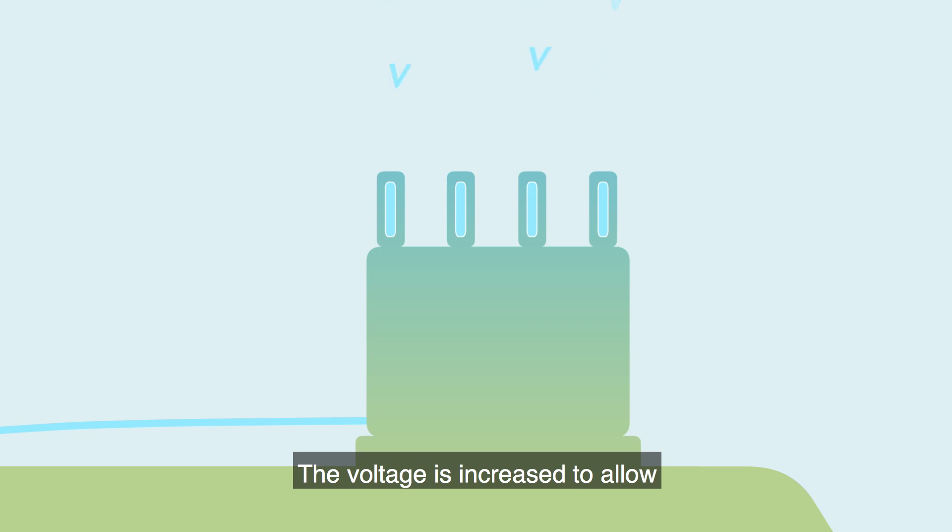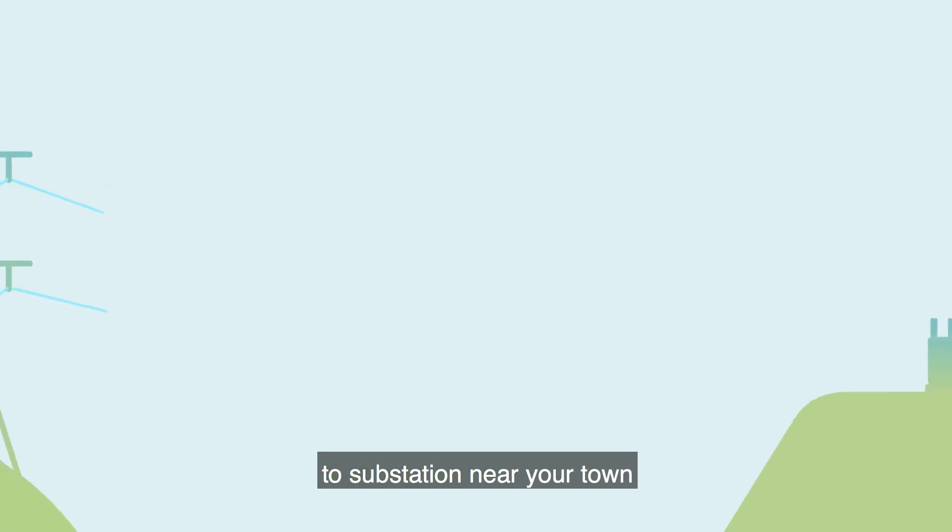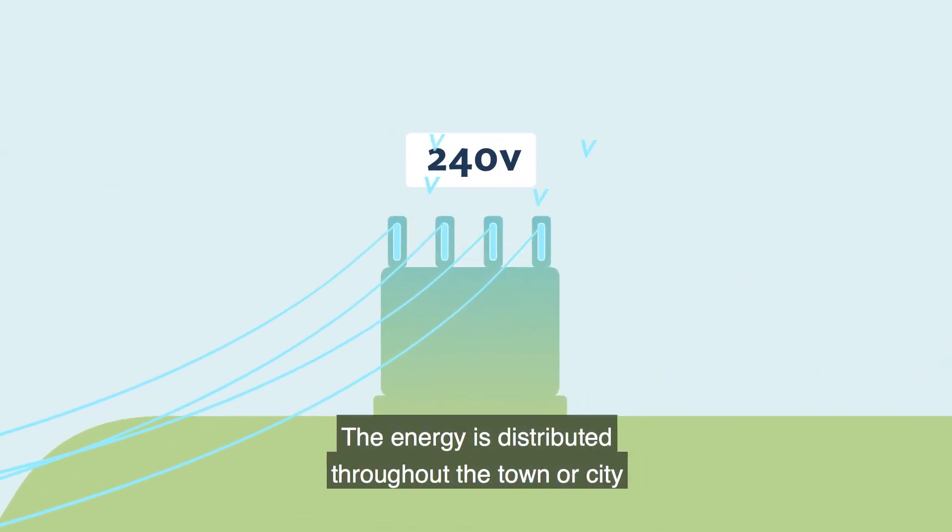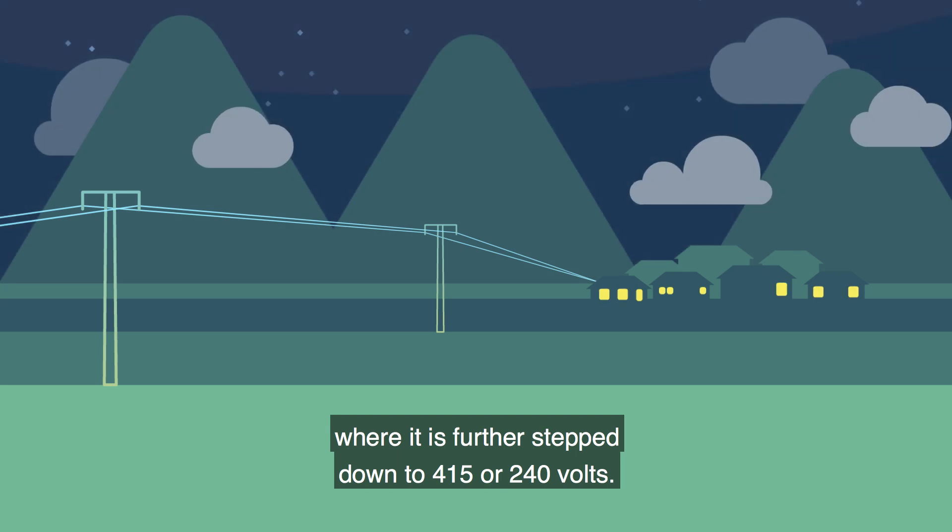The voltage is increased to allow for the efficient transmission of energy to a substation near your town, where it is then stepped back down to a lower voltage. The energy is distributed throughout the town or city, where it is further stepped down to 415 or 240 volts.